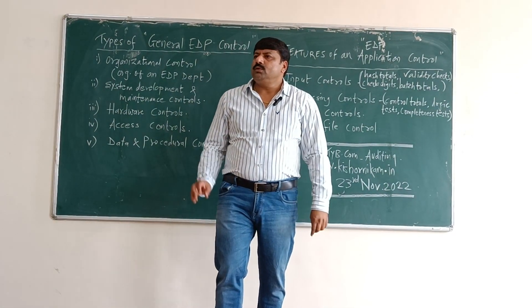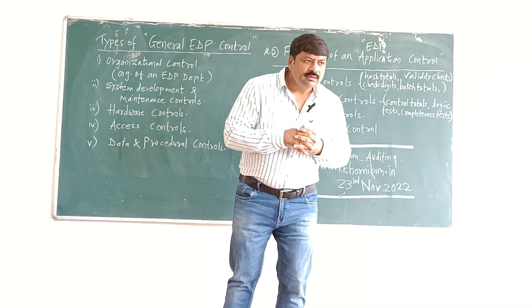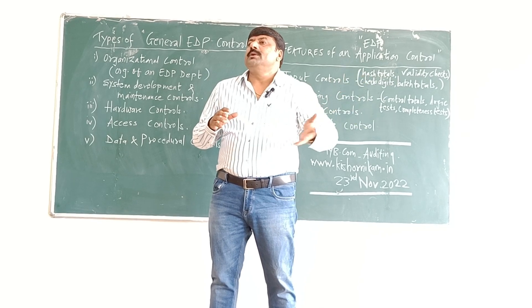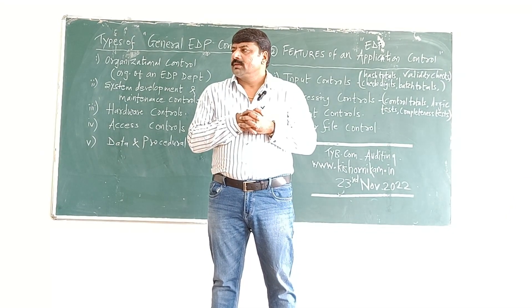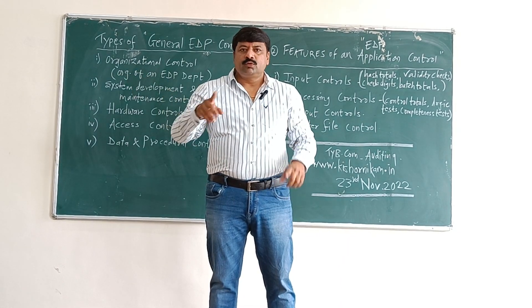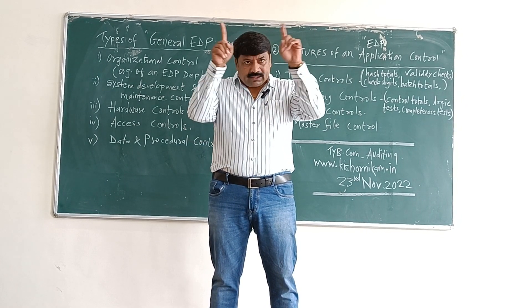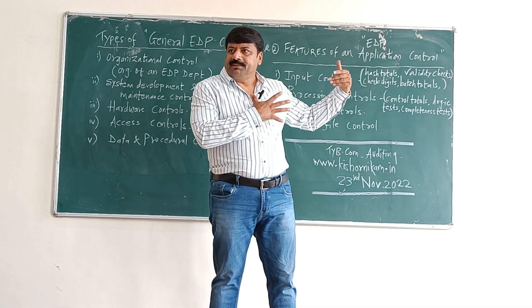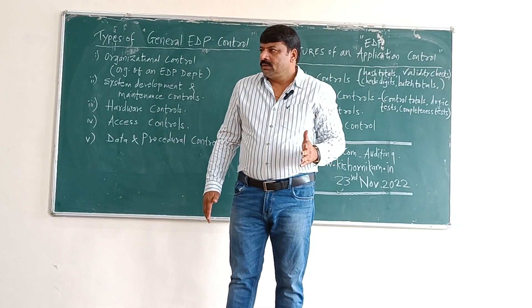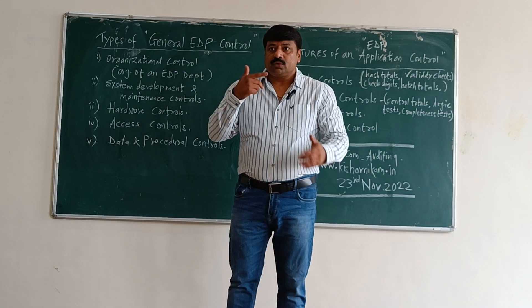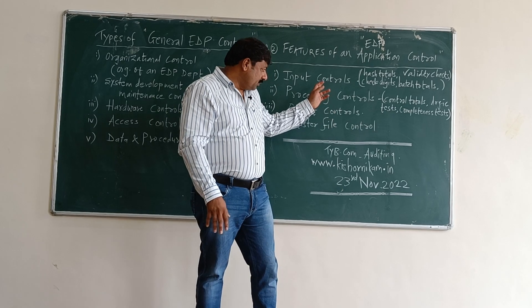Output controls: output is the result of input. When you print, that is an output. If you see the result on the visual display unit — the screen — that is also an output. If you take a printout, that is an output. If you transfer it to another medium, that also becomes an output. Checking whether output is coming correctly is one of the application controls.